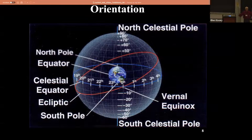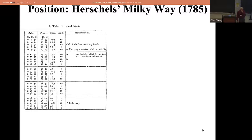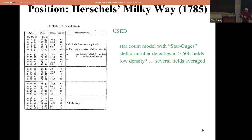Did you know there were the Herschels - husband and wife - who decided they would use positions to figure out what the galaxy looked like? They used things called star gauges - you would call them fields on the chip of your giant CCD today. They were just counting how many stars there were in many hundreds of fields in the sky, saying I see this many stars over here and this many here, and tried to build up a map.